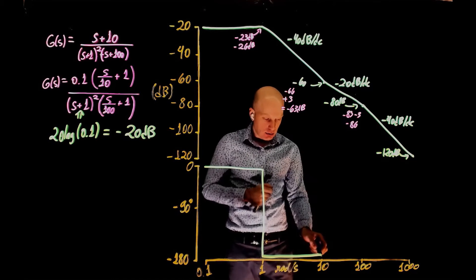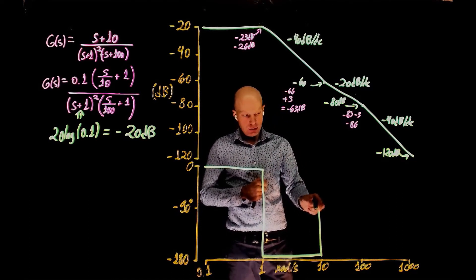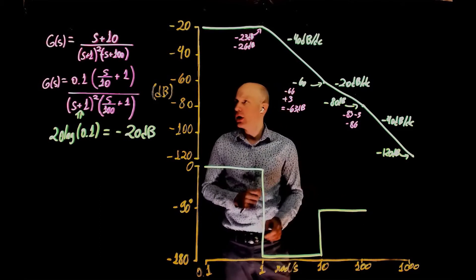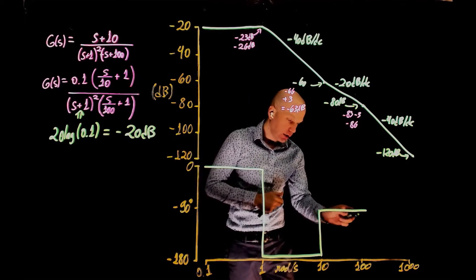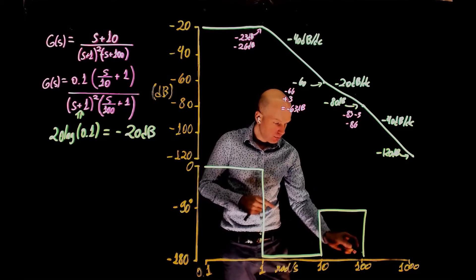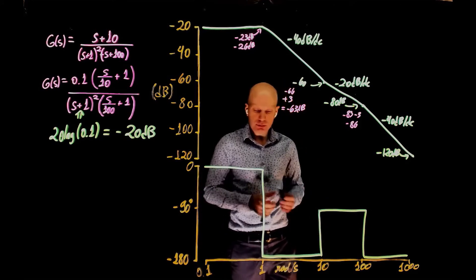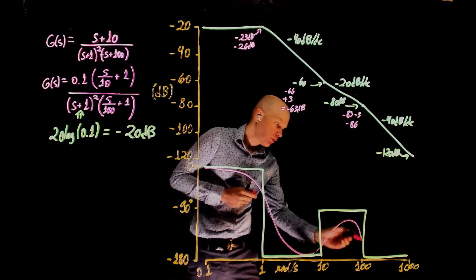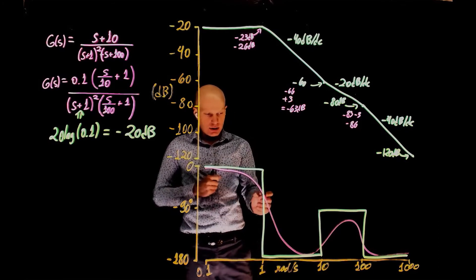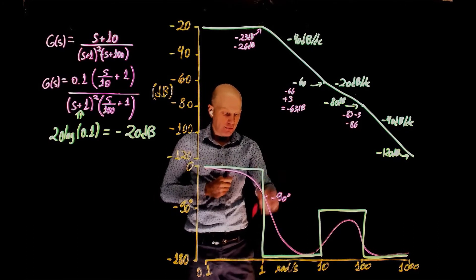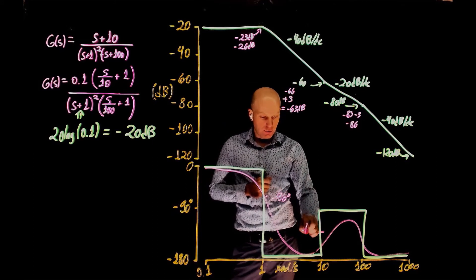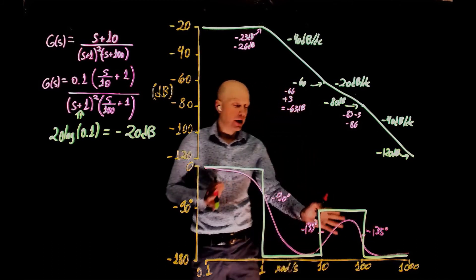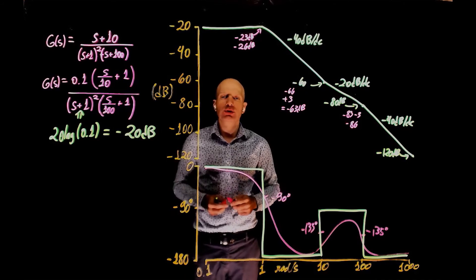At ω=10 we have a zero, which adds 90 degrees, bringing the phase up from negative 180 to negative 90 degrees. This stays at negative 90 degrees up to the next cutoff frequency at 100 rad/s, where another pole adds negative 90 degrees, taking the phase from negative 90 back to negative 180 degrees. Interpolating the curve, it passes through negative 90 degrees halfway and through negative 135 degrees at the appropriate transition points. So here we have the phase and the magnitude of the function g(s).